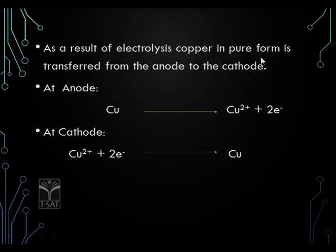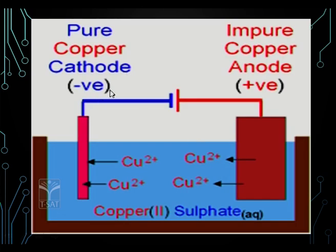As a result of electrolysis, copper in pure form is transferred from anode to cathode. Copper splits into copper ions liberating two electrons; pure copper ions then react with electrons to form copper metal, which gets deposited at the cathode. The pure copper cathode is the negative electrode, and the impure copper anode supplies copper ions, so all pure copper ions get deposited at the cathode only.